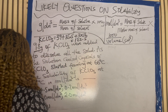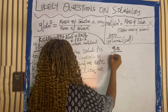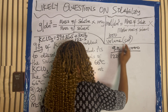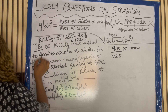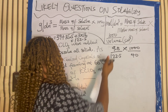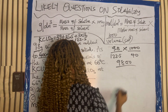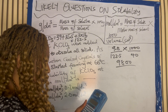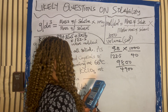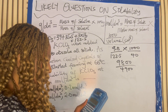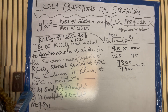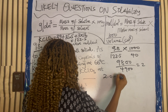Using the formula mole per dm cube, this would be: mass of the solute is 9.8, over molar mass 122.5, times 1000 over volume. What is the volume here? The volume given to us is 40 cm cube. So this times this will give us 9800, over 122.5 times 40, which gives us 4900. Dividing 9800 by 4900 gives us 2. So our answer is 2.0 mole per dm cube.